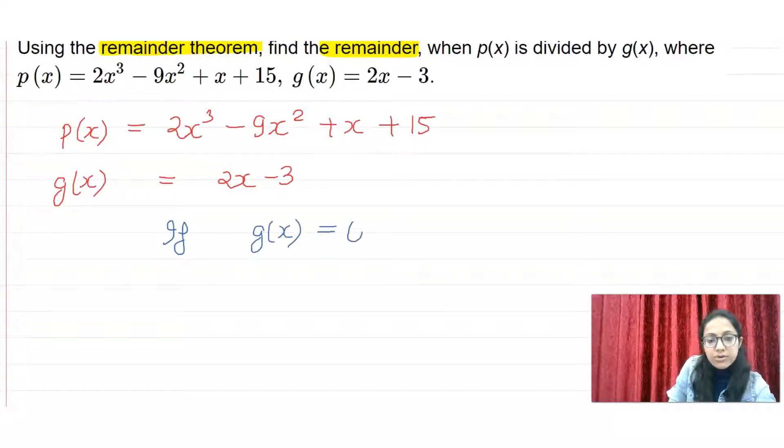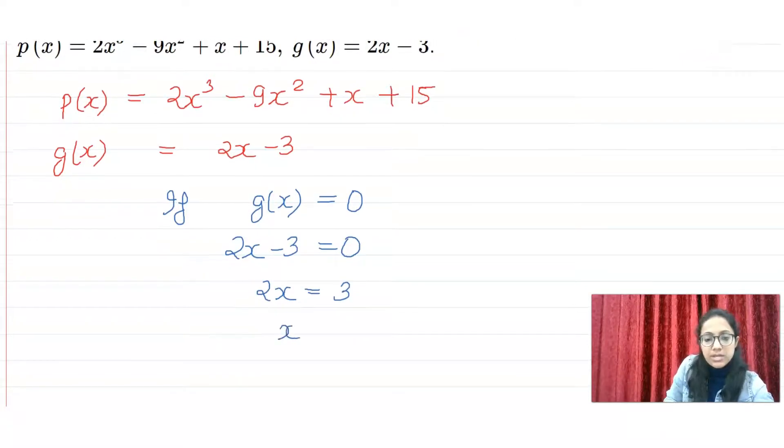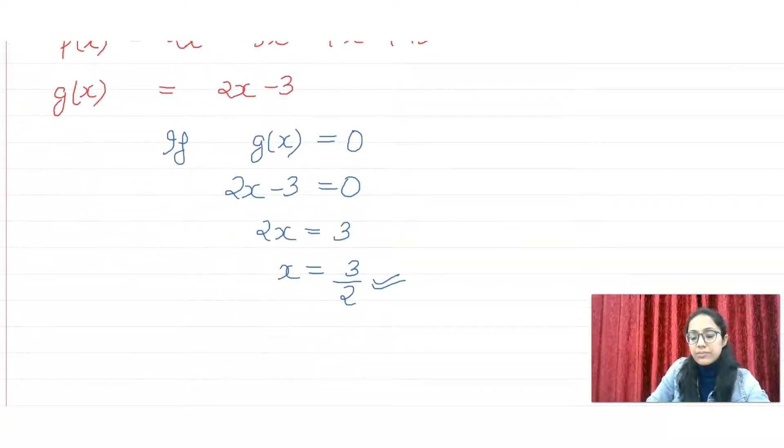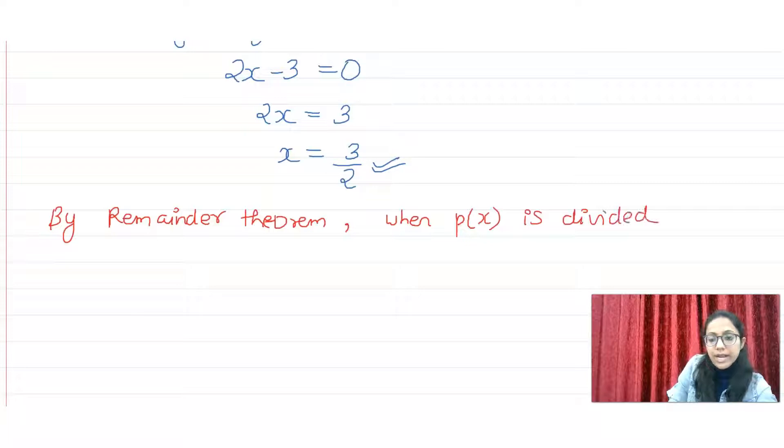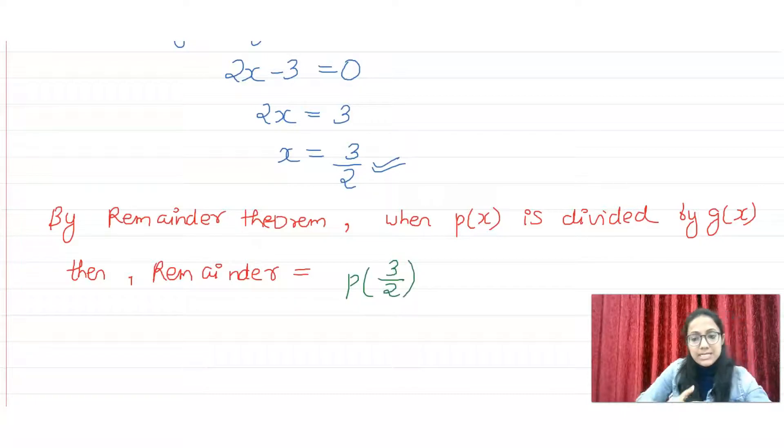If g of x is equal to 0, then what will we find the value? 2x minus 3 will be equal to 0, and then 2x will be equal to 3, so x equals 3 by 2. Because you have to find the remainder theorem. Now, let's see here. By remainder theorem, when p of x is divided by g of x, then the remainder will be equal to p of 3 by 2.